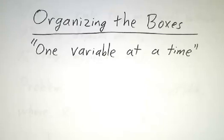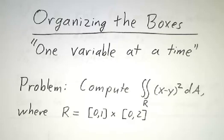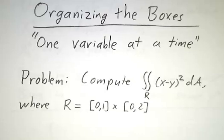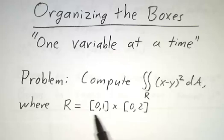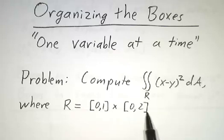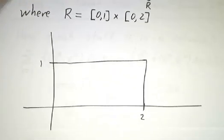We're going to do an integral over a two-dimensional region by integrating first over one variable and then over the second variable. For example, let's suppose that we're asked to compute the integral of x minus y squared dA over a rectangle, where x goes from 0 to 1 and y goes from 0 to 2. Here's a picture of that rectangle.